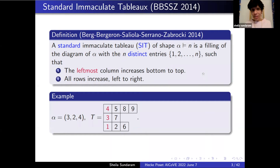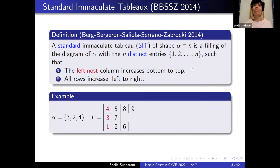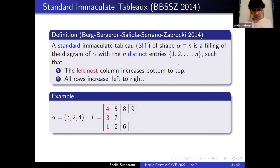A standard immaculate tableau is filled with distinct entries from 1 to n. It was defined by Berg, Bergeron, Saliola, Serrano, and Zabrocki. What they were trying to do was construct a non-commutative version of Schur functions.